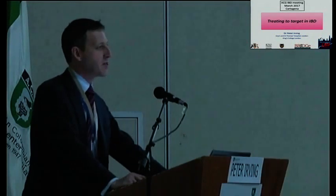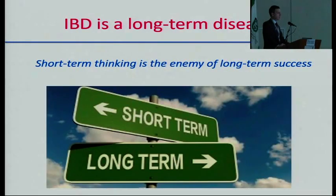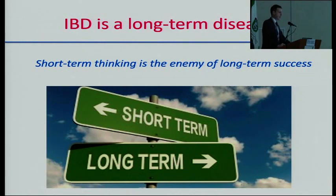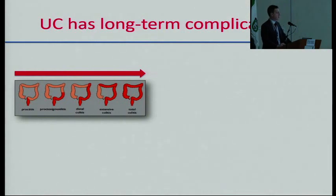I'm going to talk about treating to target in inflammatory bowel disease. This is an important topic because we're dealing with a set of conditions that are not short-term but long-term conditions, with long-term outcomes that need to be considered when we're thinking about how to manage them. Key to that long-term nature of the disease is that ongoing active inflammation is associated with complications. Ulcerative colitis, for example, is a disease where active inflammation in the long term can lead to problems over long periods of time.